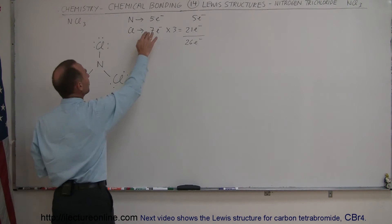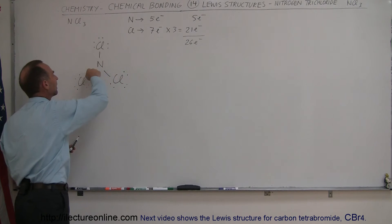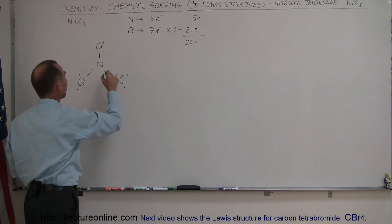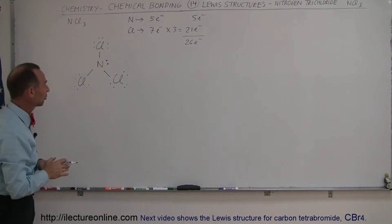What about nitrogen? Well, it had five to begin with. Three of the five are locked in the bonding with the chlorines. That means it has two additional electrons. So let's give it the two additional electrons like that. So that should be okay. That should be the Lewis structure.